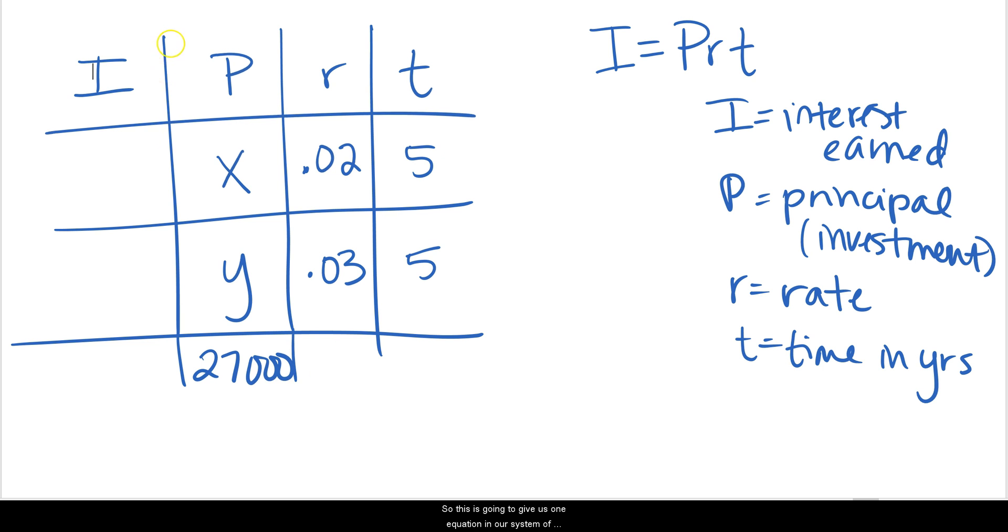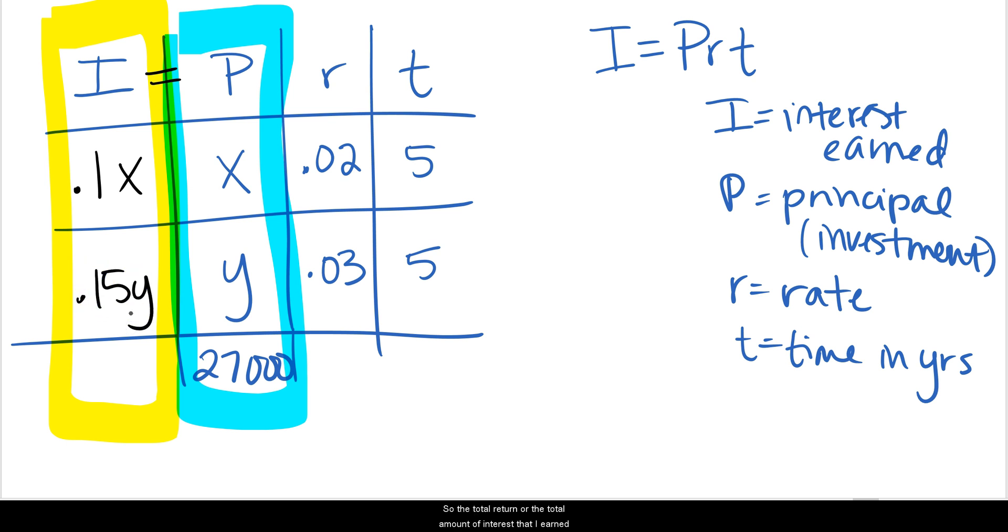This is going to give us one equation in our system of equations. But we need to get the other one from the interest earned column. So we need to put some values in that column. Remember that I equals P times R times T. So if I take 5 times 0.02 times X, that would give me 0.1X. And I'll do the same thing for the 3% interest row. So 5 times 0.03 times Y will give me 0.15Y. The total return or the total amount of interest that I earned was $3,425.